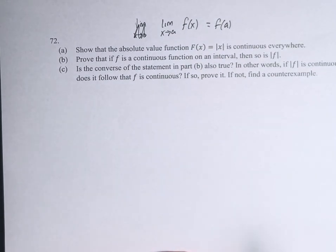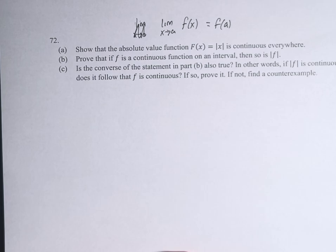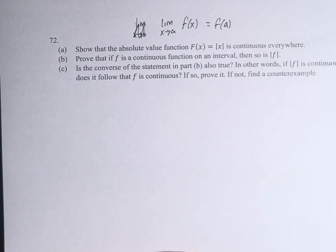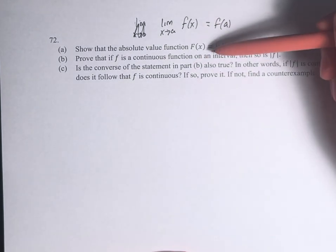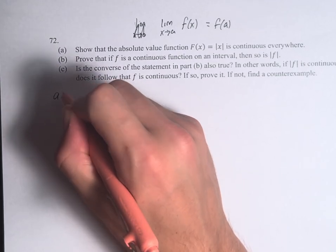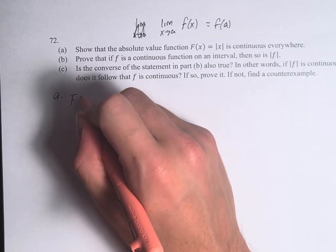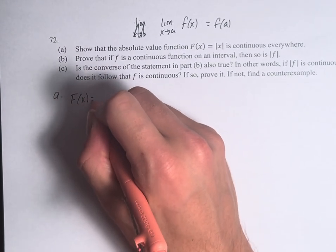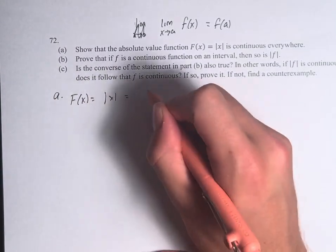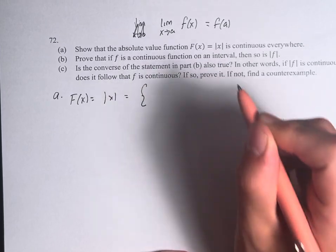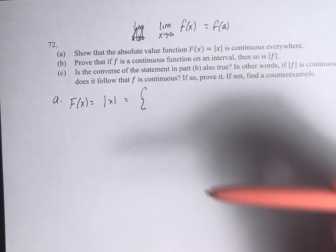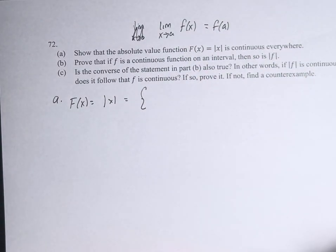The problem is we don't have any clever rules about anything involving an absolute value. So what we're going to have to do is turn f of x, which is equal to the absolute value of x, into a piecewise function, and then we can look at the continuity of each part of that piecewise function.